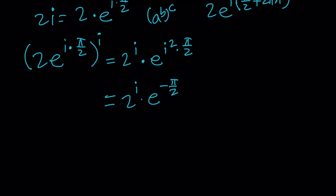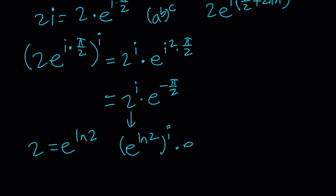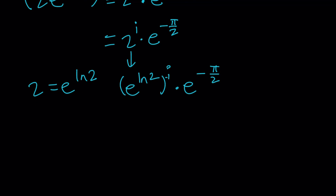I think we've done i to the power i before, so it should be very similar to that one. Now, to handle 2 to the power i, we're going to write 2 as e to the power ln 2 and then substitute. So when we raise both sides to the power i, we get e to the power ln 2 to the power i, multiplied by e to the power negative pi over 2. Multiplying the exponents gives e to the power i·ln 2, times e to the power negative pi over 2.